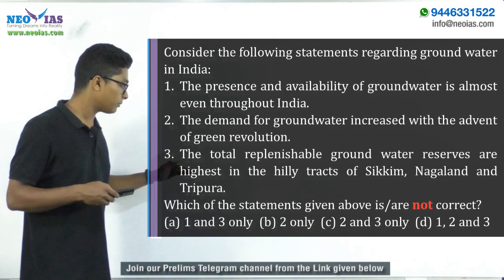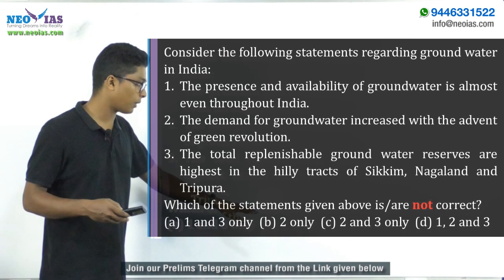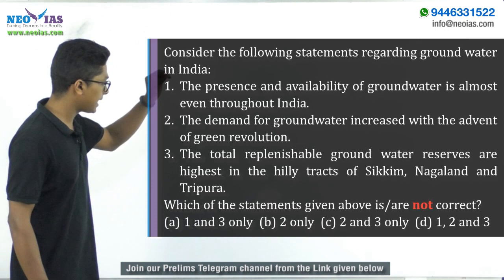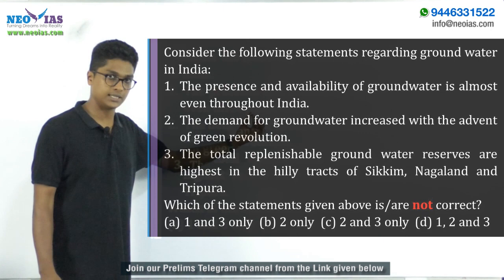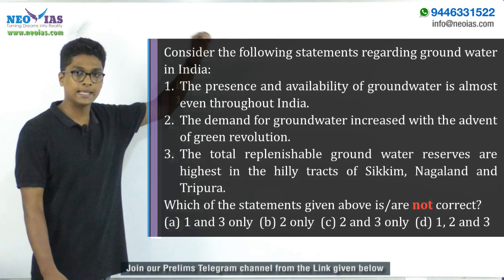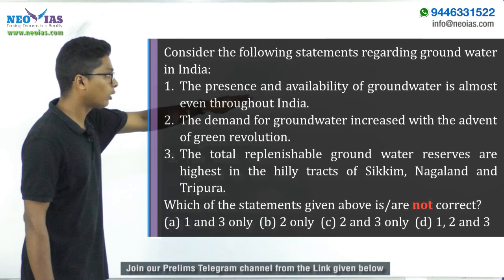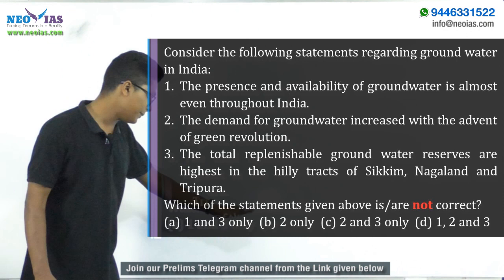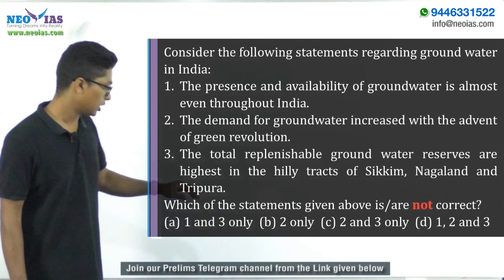Now let's go back to the question — it is a three-statement, 'not correct' based question. Statement 1 says: 'The presence and availability of groundwater is almost even throughout India.' The keyword is 'almost even throughout India.' This is wrong — in hilly regions availability is less, while in plains it is more. So Statement 1 is incorrect, meaning we can eliminate options B and C.